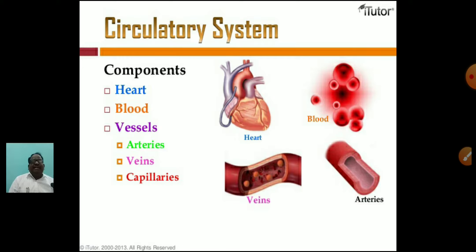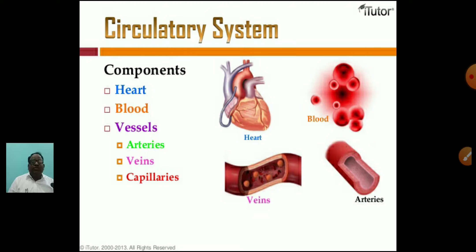The circulatory system has some components: heart, blood, and vessels. The heart is a pumping organ in the body. Blood is a fluid connective tissue — it is the river of life. Vessels are three types: arteries, veins, and capillaries.